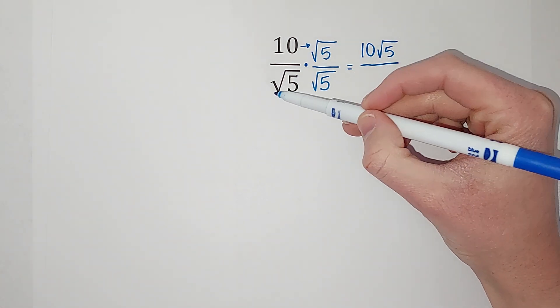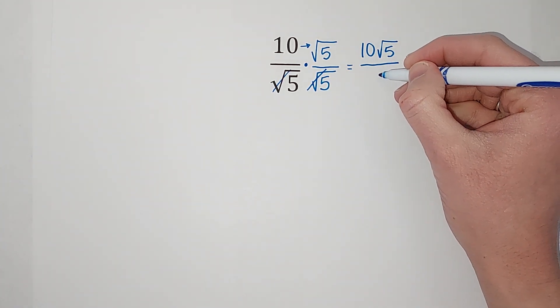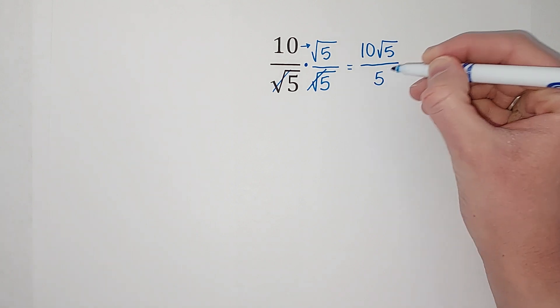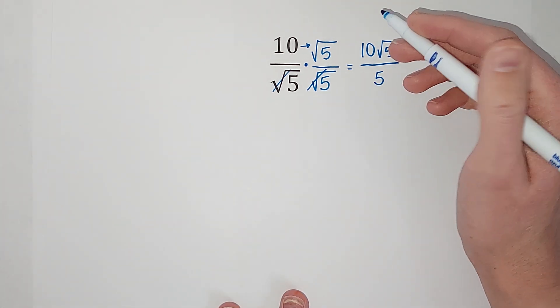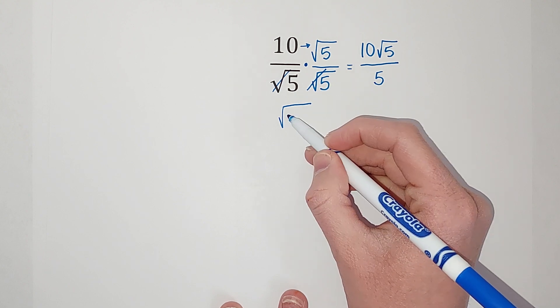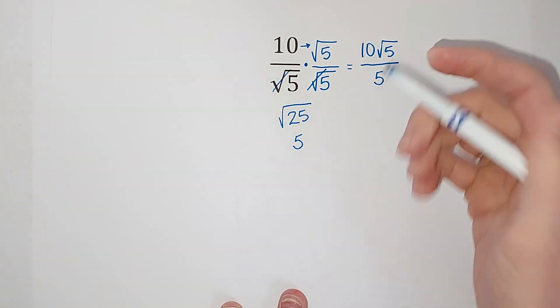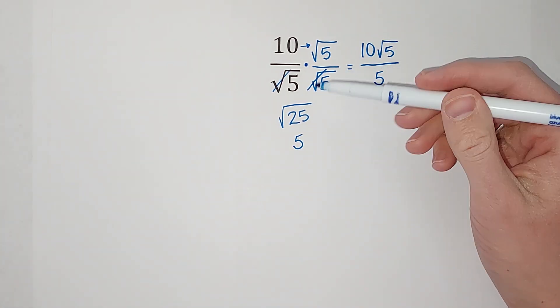And just leave me with 5. Why does that work? When you multiply radicals, you multiply the numbers together, so I would get 5 times 5, which gives me 25. And what's the square root of 25? Well, it's 5, so that's why that happened.